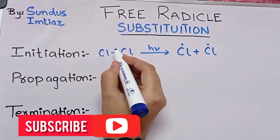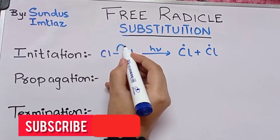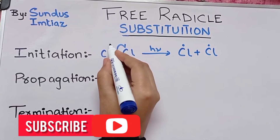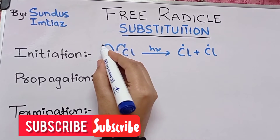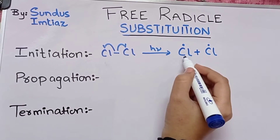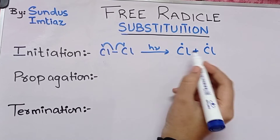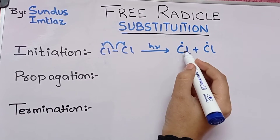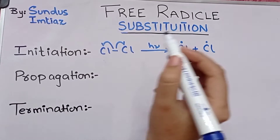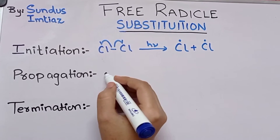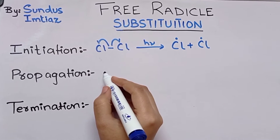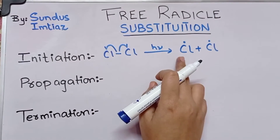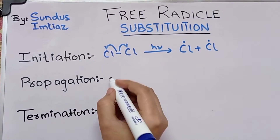In the initiation step, the halogen molecule breaks down under UV radiation — one electron moves towards one side and one electron moves towards the other side — forming two chloride radicals. These chloride radicals then propagate through other chain reactions.